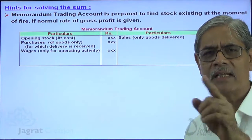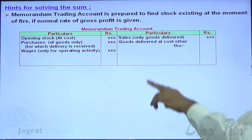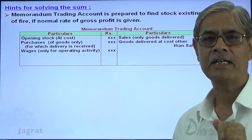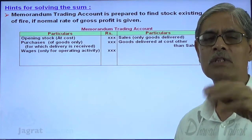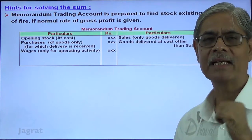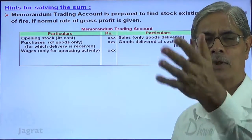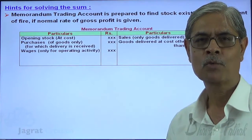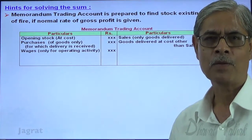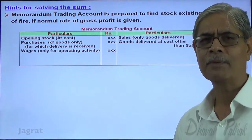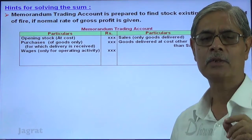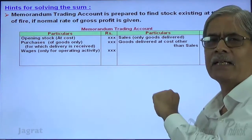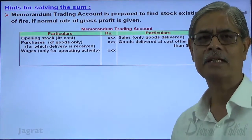For sales, only those sales are recorded for which goods have been delivered. Goods delivered at cost other than sales — for example, goods taken for personal use, goods given for charity, goods stolen — these are goods outwards. Similarly, goods given under consignment activity, goods given for joint venture, goods sent to customer on sale or return basis or on approval basis — these various ways by which goods go out of the godown — are recorded at cost on the credit side. From purchases, you can deduct goods taken for personal use and goods given for charity to find net purchases. But goods given to the consignee should not be deducted from purchases; it should be shown on the credit side of this statement.